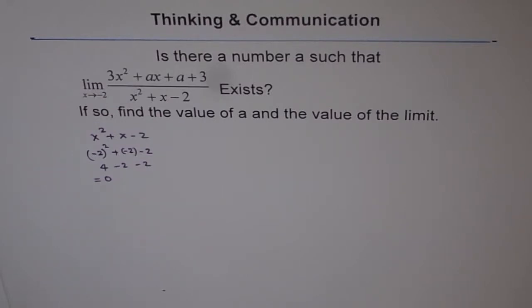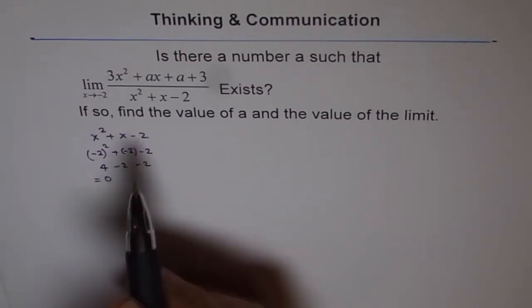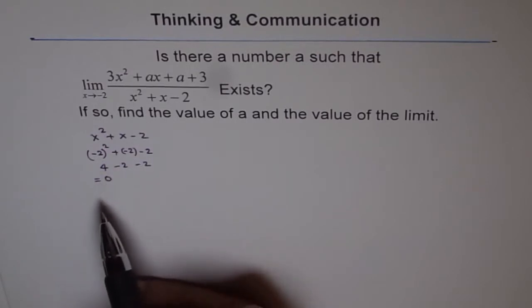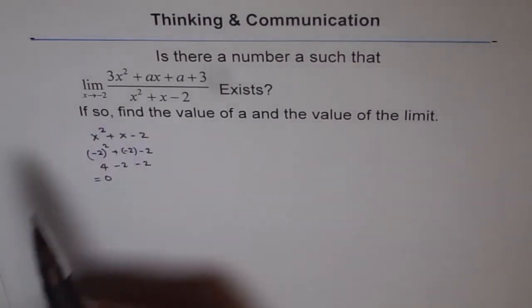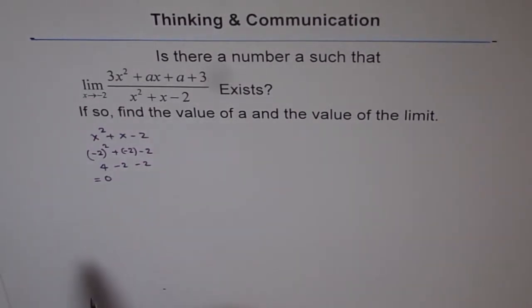But if the numerator is 0, then you get 0 over 0 form. And if there is 0 over 0 form, the common factors will cancel out. And we surely have a factor of x plus 2 in the denominator which made this 0. So, to find the value of a, what we need to do is to equate numerator to 0 and plug in x as minus 2.